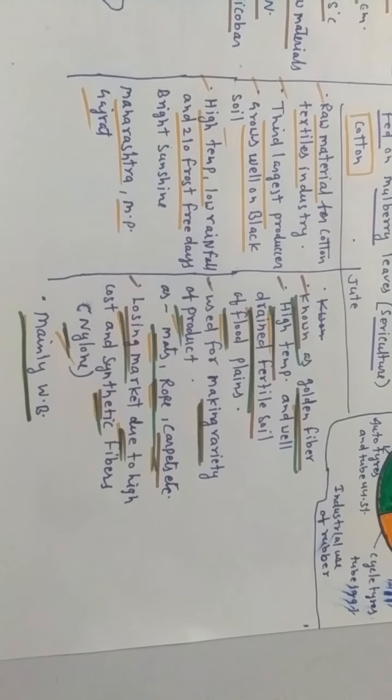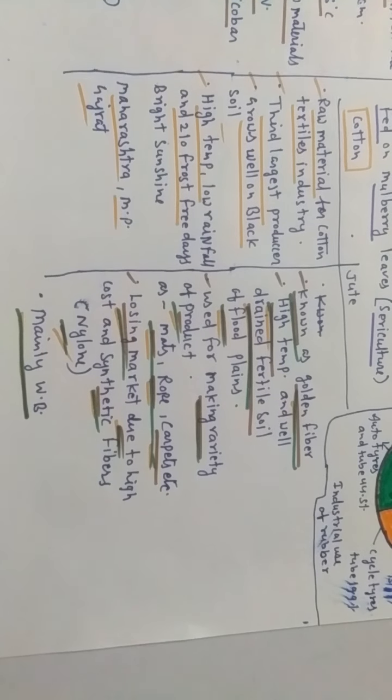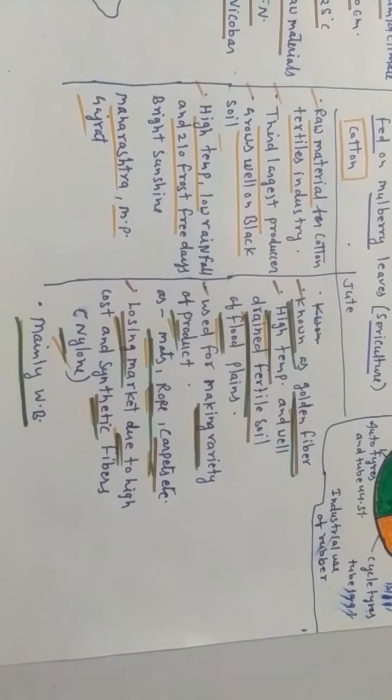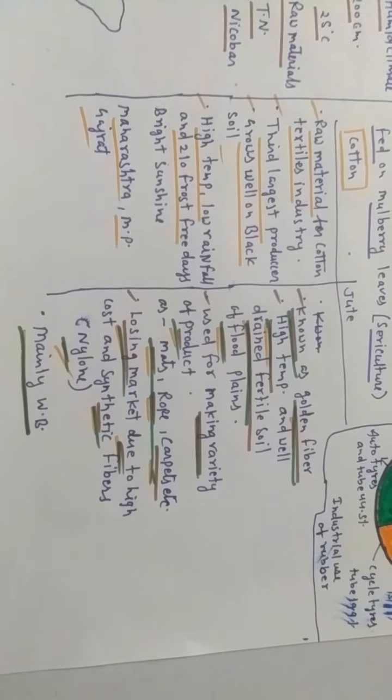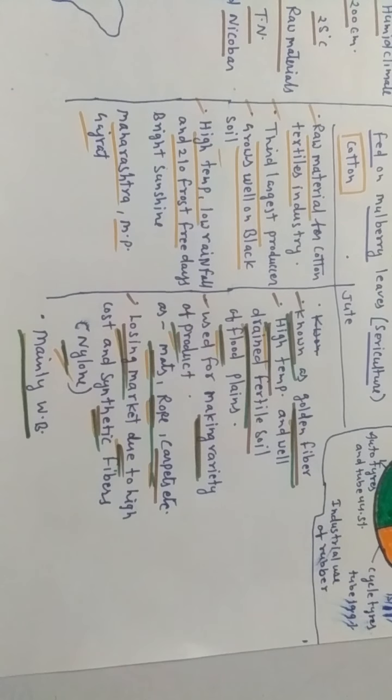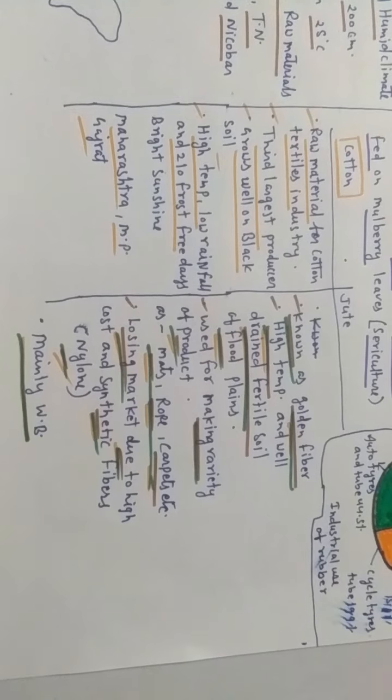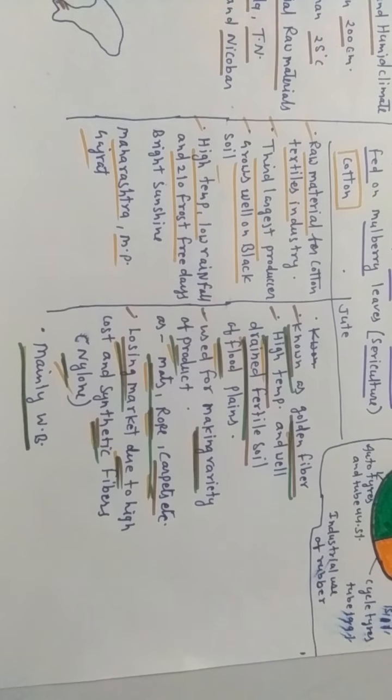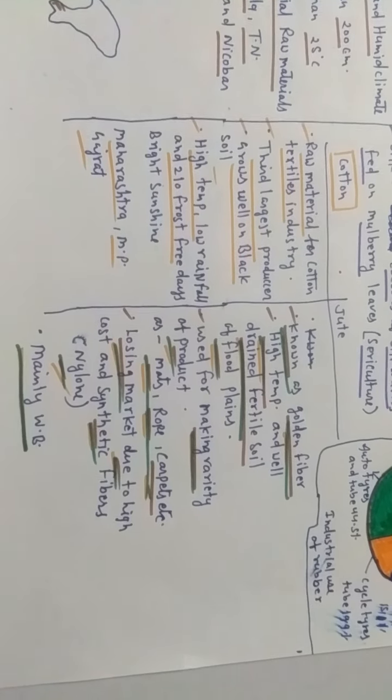One is it is getting discouragement from synthetic fiber, and second is it is not encouraged by the government and people of the country. We have to avoid polythene and many materials which increase pollution. If we encourage it, we can not only discourage pollution but also maintain the health of production of the jute industry, as well as maintain the health of people.